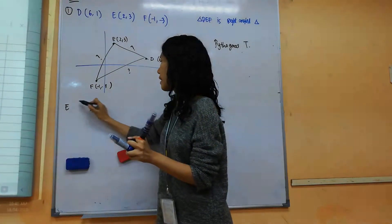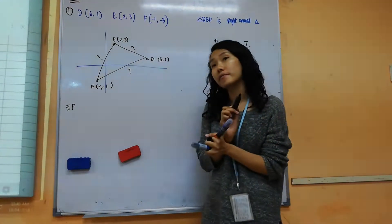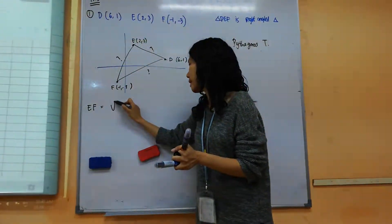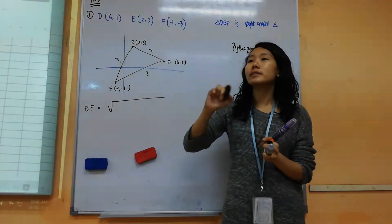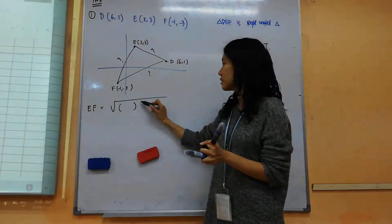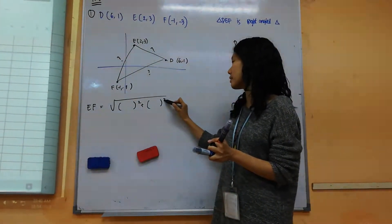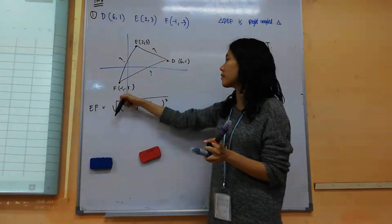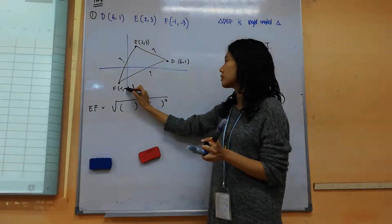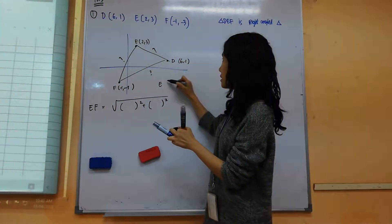Now let's find. You have to find ED and EF. Let's say I want to find EF. Let's say Jane, start the formula for me please. EF. I want E and F. I'll write here.